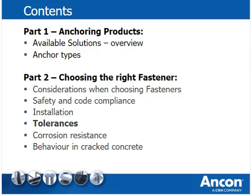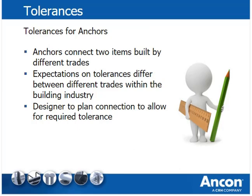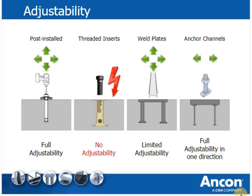Another important point when deciding on the right fastener is the tolerances the fastener must allow for. Anchors are usually used to connect items built by two different trades. When a facade is fixed to a concrete floor, the tolerance expectations can differ between the concrete contractor and the facade manufacturer. Trades dealing with steel or aluminum, like facade manufacturers, and trades dealing with mechanical equipment like elevator installers will require tighter tolerances. The designer of the connection zone needs to know the required tolerance to specify the right connections and avoid clashes and delays. The anchor must provide the adjustability to bridge usual building tolerances between the two connected components.